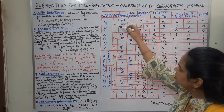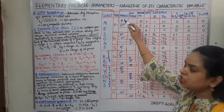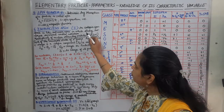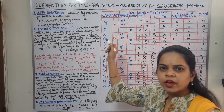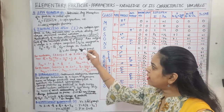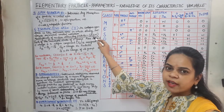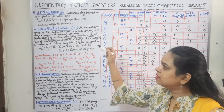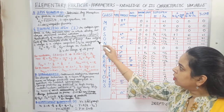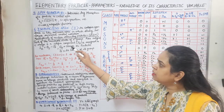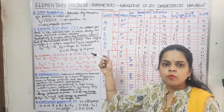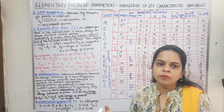Since pi mesons have a multiplicity of 3, we put 3 equal to 2I+1 and calculate the value of I. From the multiplicity we can calculate I, and for each I state, for each multiple state of the group, we have an integral electronic charge for that particle and the isospin component — the Iz component — for a particular particle.